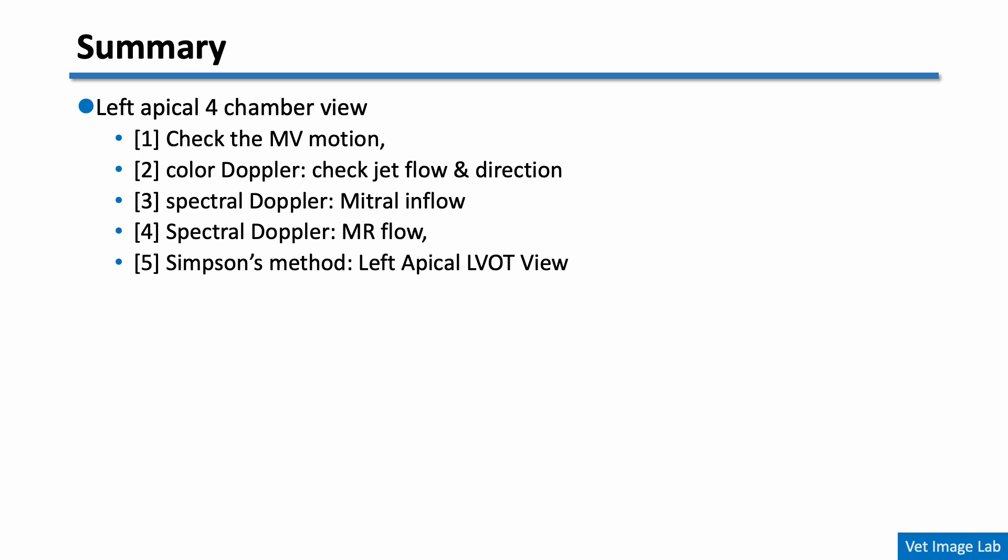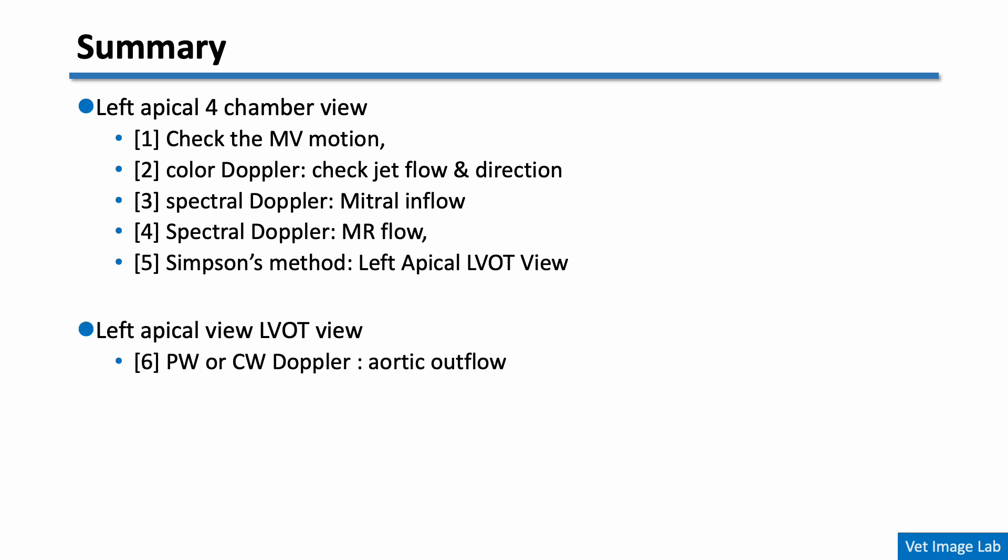To summarize the left apical scan: from the four-chamber view, first evaluate mitral valve motion — checking how well leaflets open and close, and identifying prolapse or flail. Next, apply color Doppler to assess regurgitant jet flow and direction, estimating severity and detecting eccentric jets. Using pulsed wave Doppler, assess mitral inflow E and A waves for the E/A ratio and insight into diastolic function and LA pressure. With continuous wave Doppler, evaluate MR jet velocity to estimate LV-LA pressure gradient. Perform Simpson's method to calculate ejection fraction. From the LVOT view, measure aortic outflow velocity to confirm that aortic pressure equals systolic LV pressure for pressure gradient calculations.